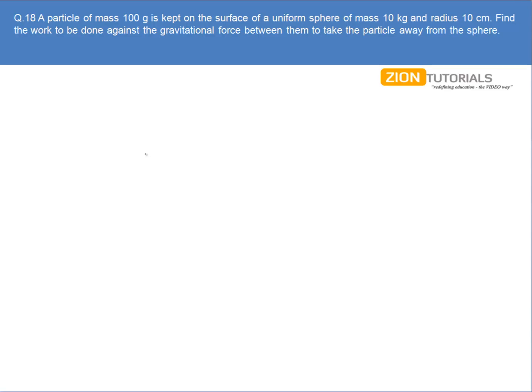In that condition I can say that it is free from the sphere. So the gravitational potential energy initially of the particle can be calculated by the formula.